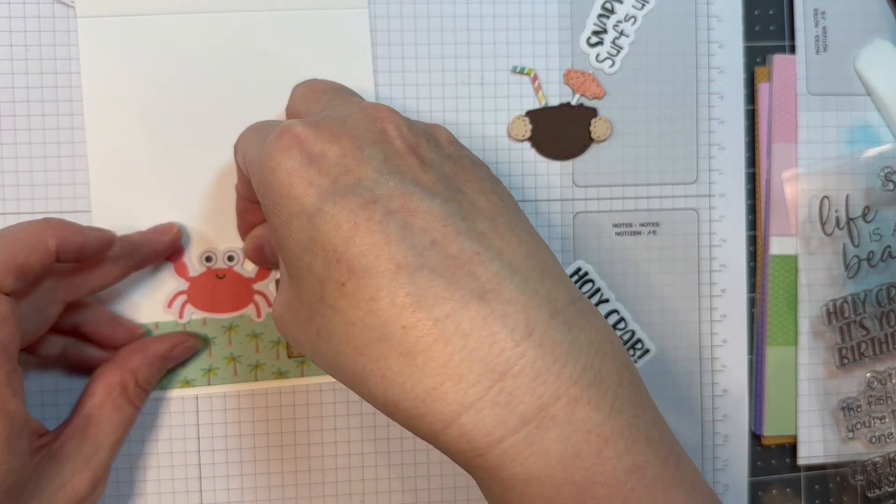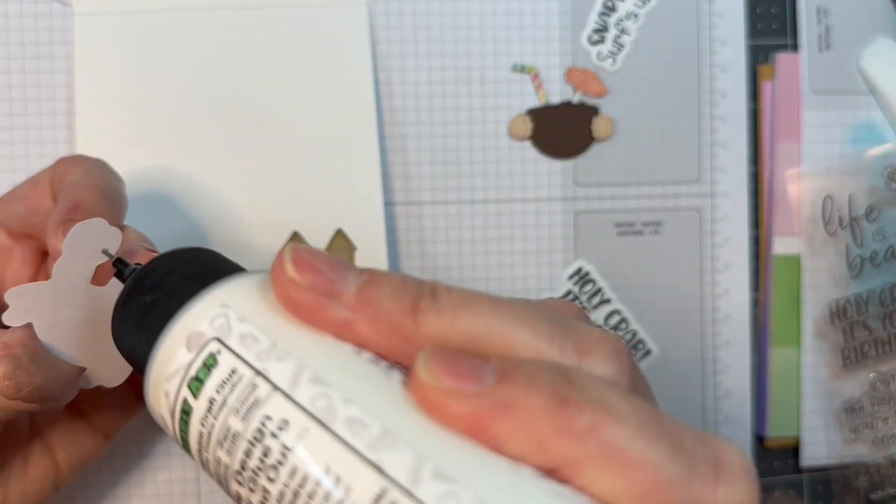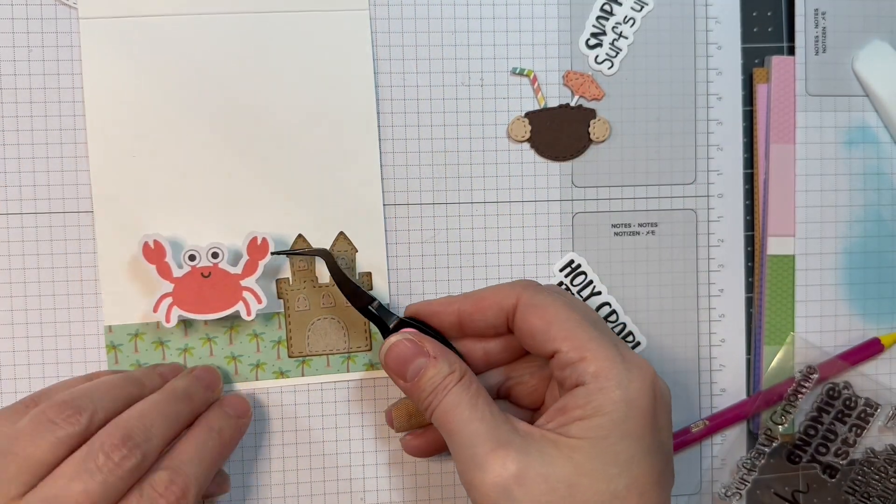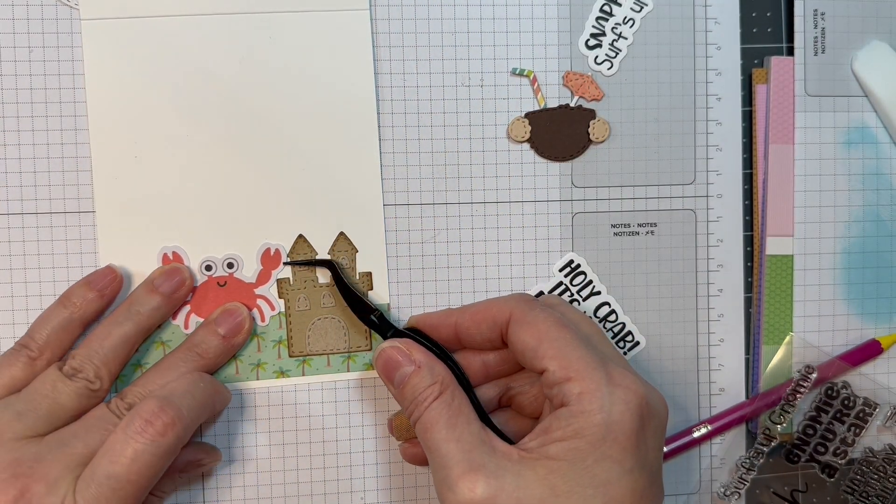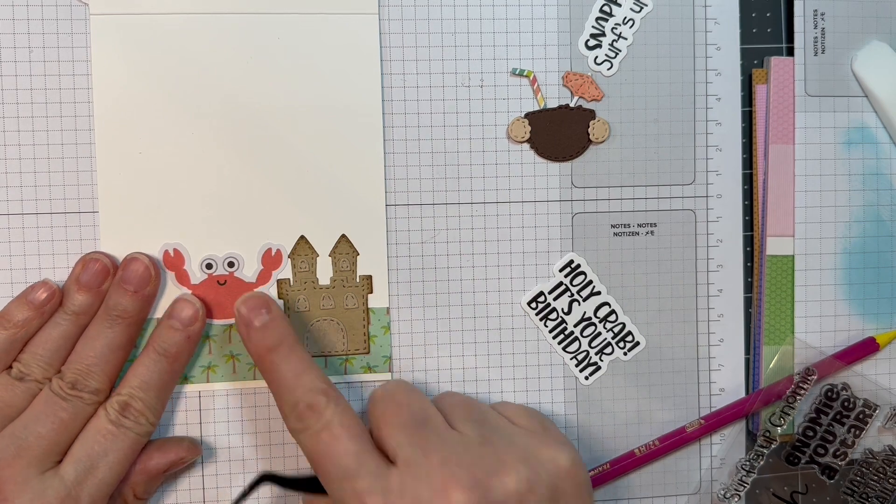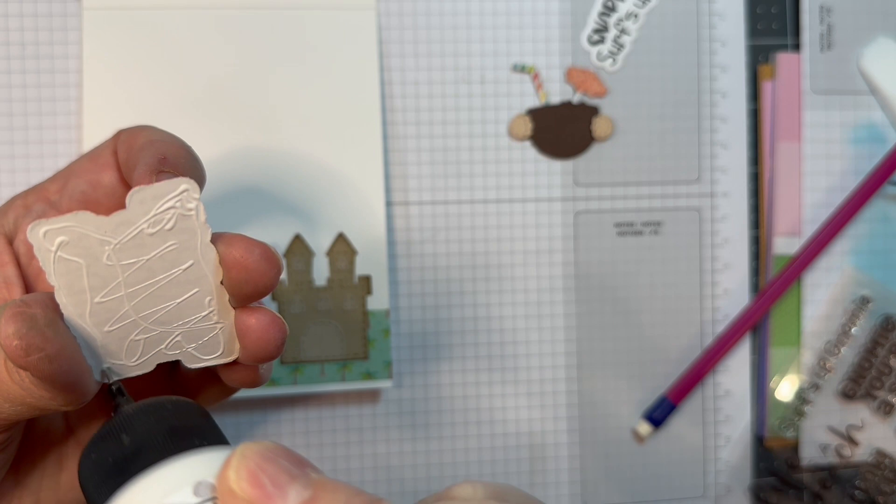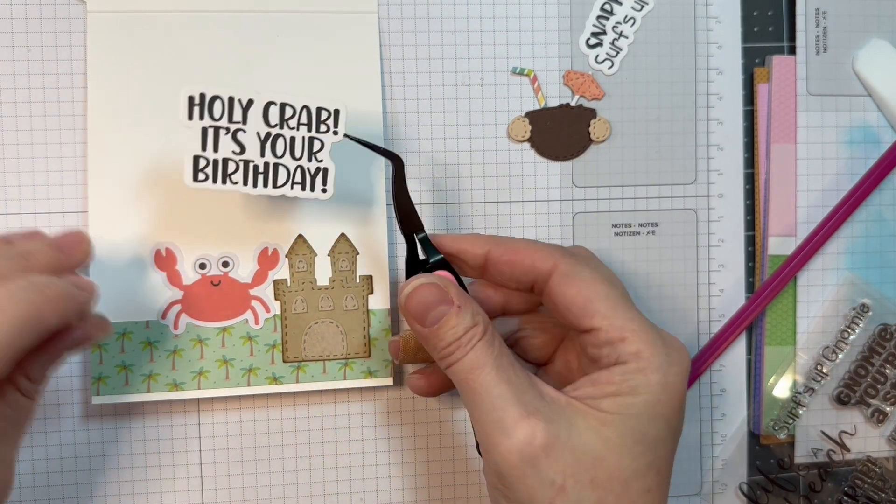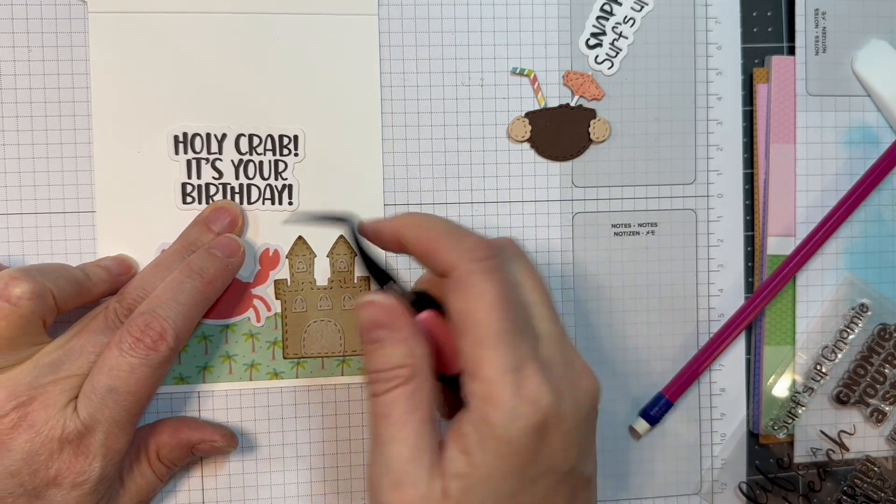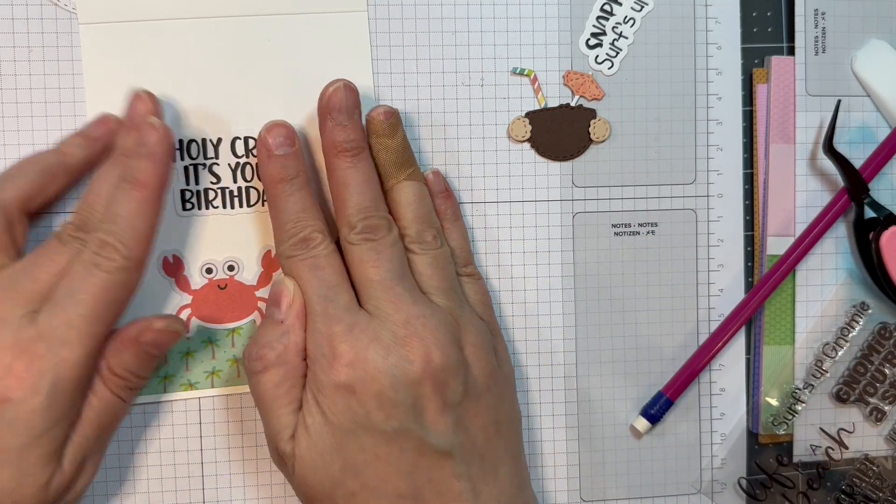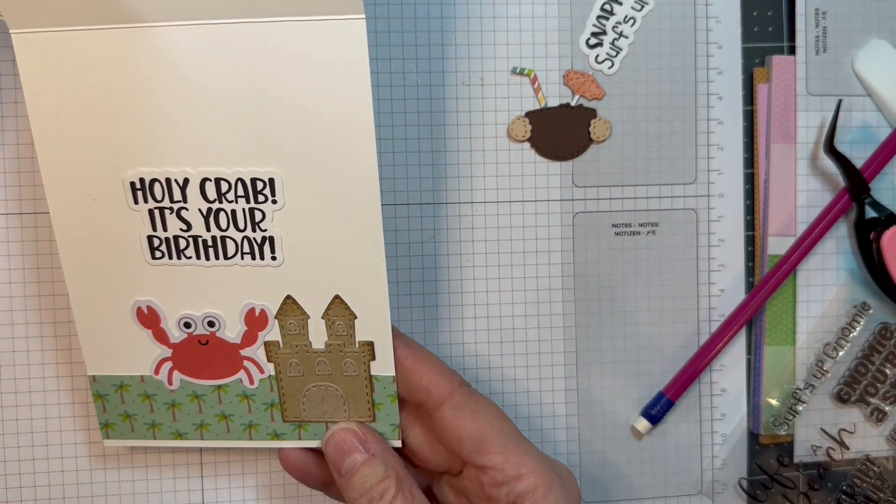I'm pulling out a little crab from the Seaside Summer Odds and Ends from Doodle Bag and I'm just going to add that to the inside of my card, because I want to put a happy birthday sentiment on the inside. I have a sentiment that says holy crab, it's your birthday from that same Ahoy Nomi stamp set and outline dies. I just wanted to add that to the inside just for a little bit of fun. Isn't that cute?